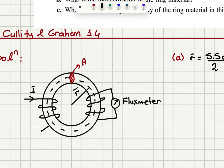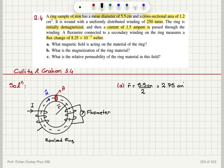This is basically a Rowland ring, and in the Rowland ring we can use Ampere's law. The magnetic flux rotates inside the ring — with this convention it's a clockwise rotation — so the magnetic field H will be in the clockwise direction. Looking at the Ampere loop, we write Ampere's law as the closed loop integral of H dot dL.